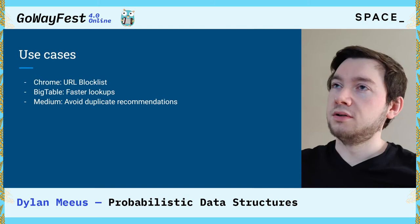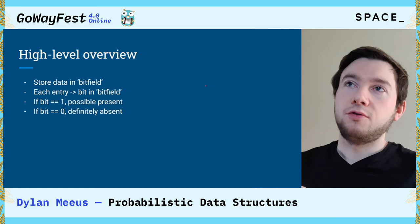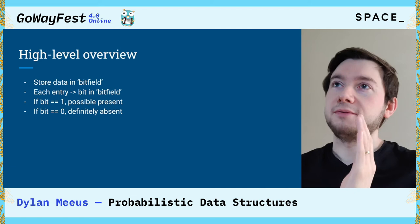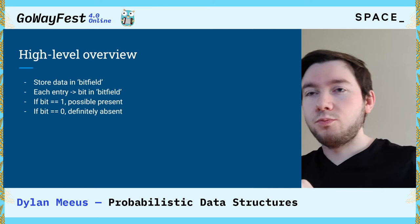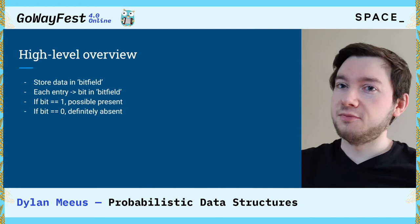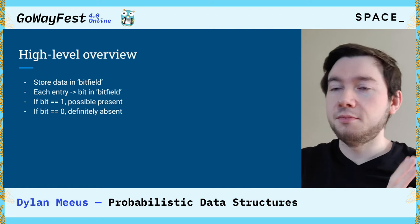At a high level, in a bloom filter all your data — all your usernames in our case — are going to be stored in a bit field. Each entry only takes up one bit. If the bit is one, then we know the element is present — well, possibly present. But if a bit is zero, then we know that the username that maps to that bit is definitely going to be absent.